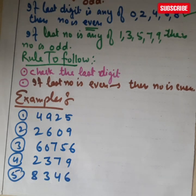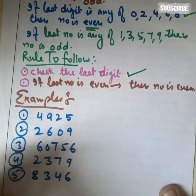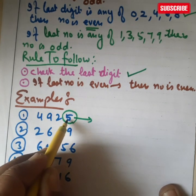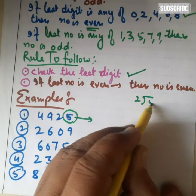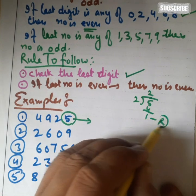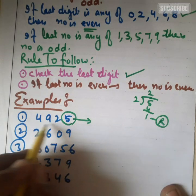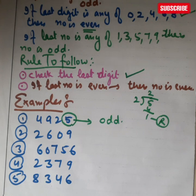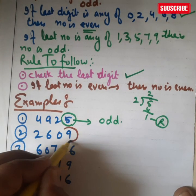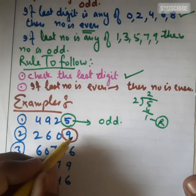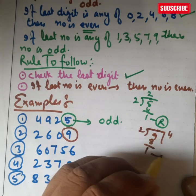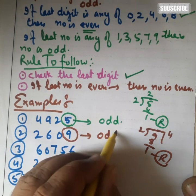We will now apply the two rules. First, check the last digit. For 4925 the last digit is 5. Dividing 5 by 2 gives remainder 1, so the whole number 4925 is odd. Similarly for 2609, the last digit is 9. Dividing 9 by 2 also gives remainder 1, so 2609 is also an odd number.